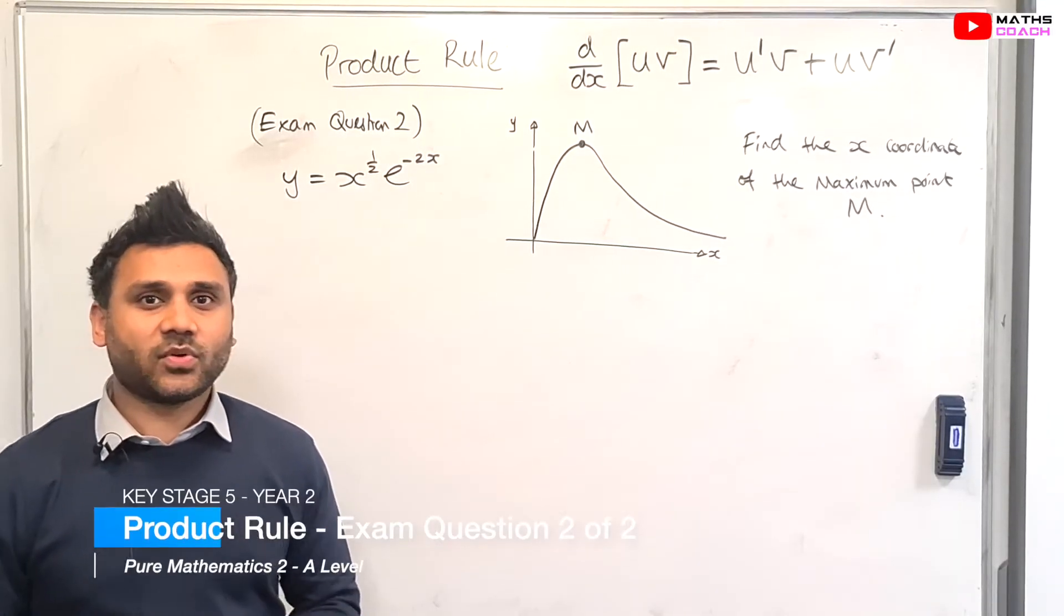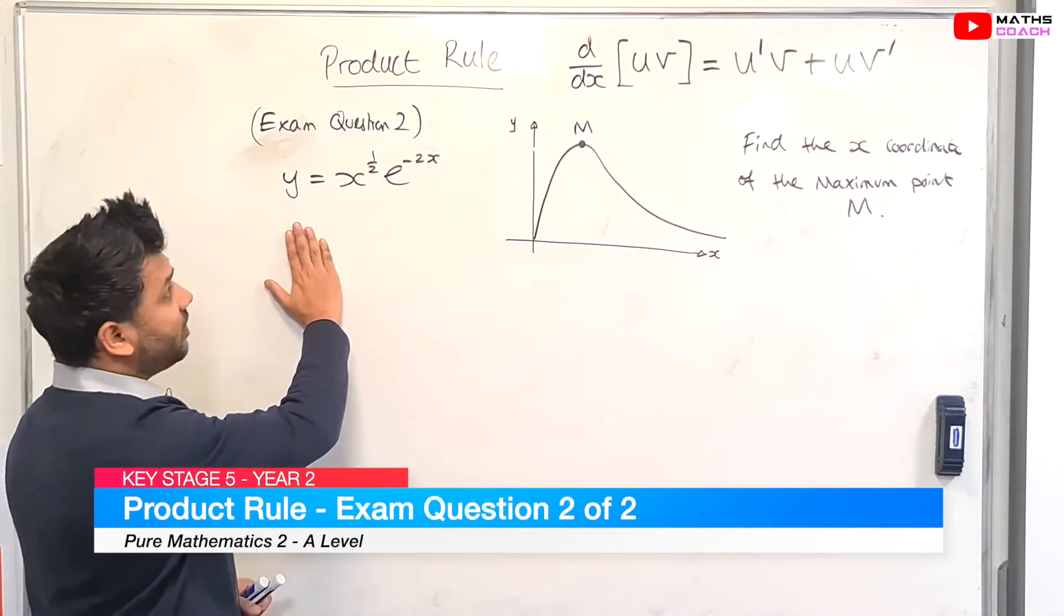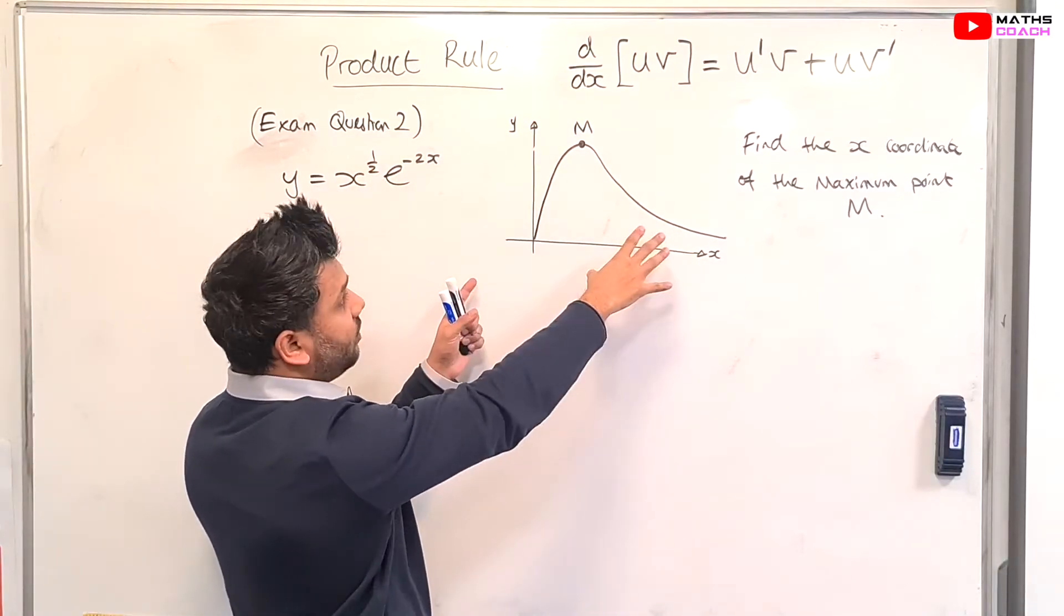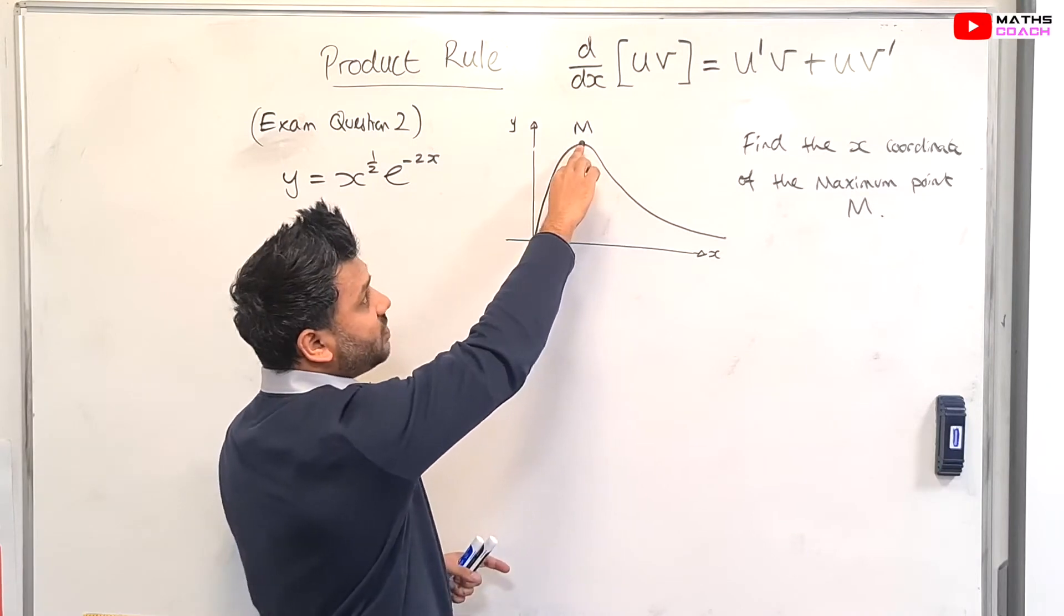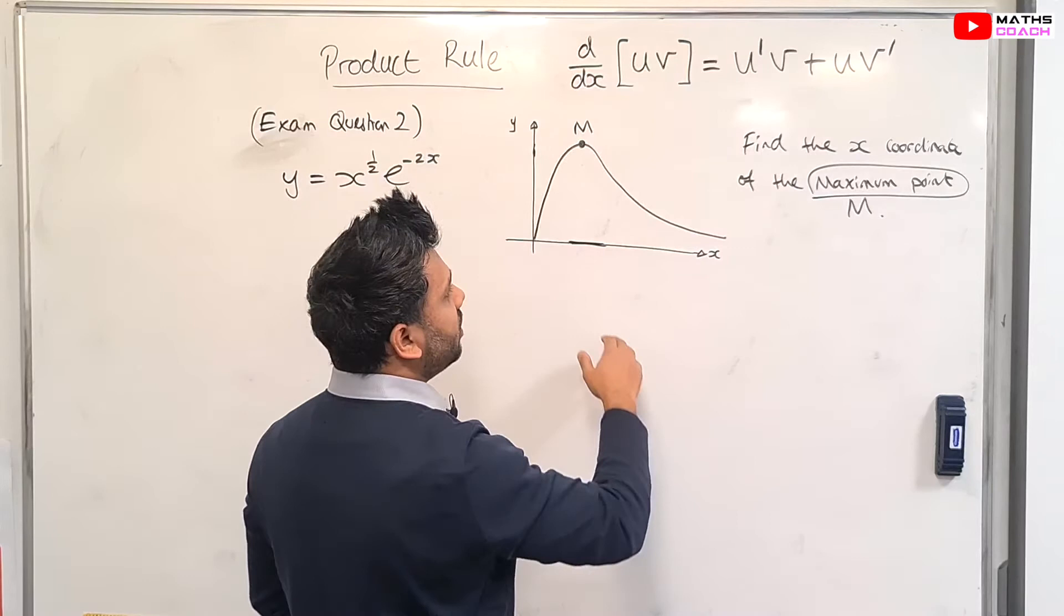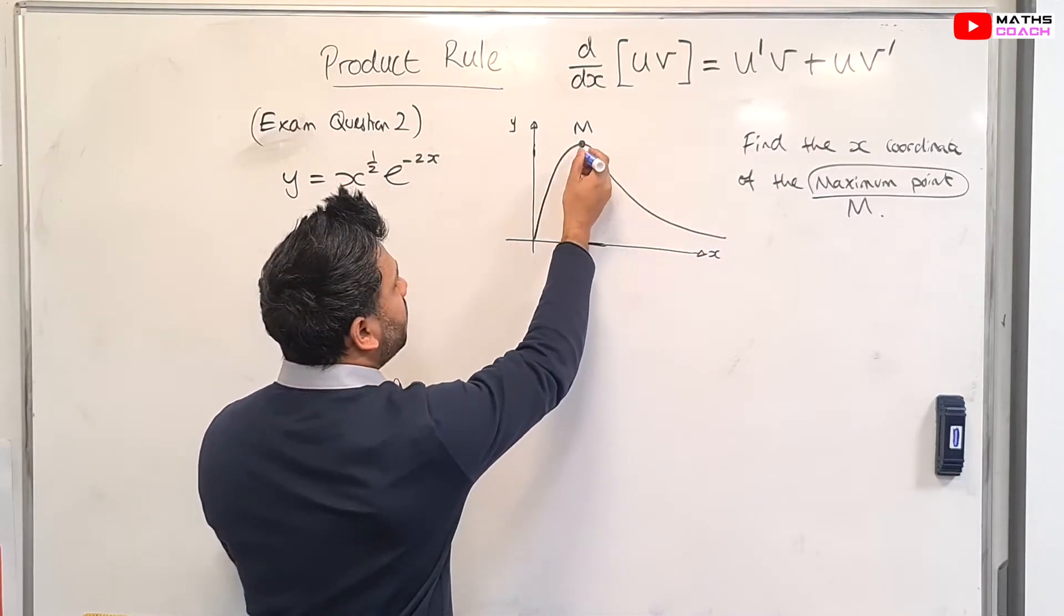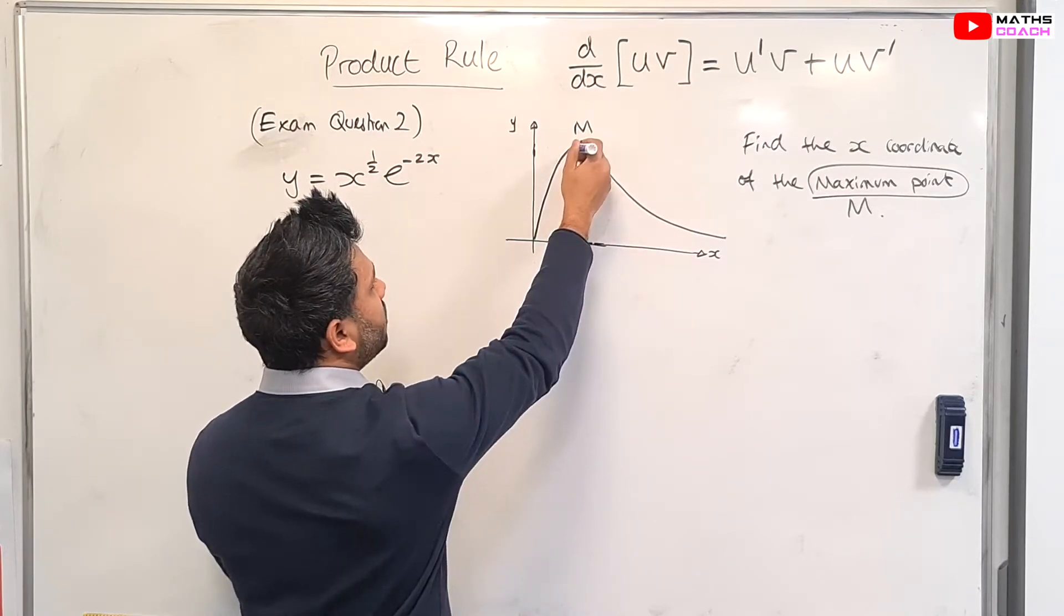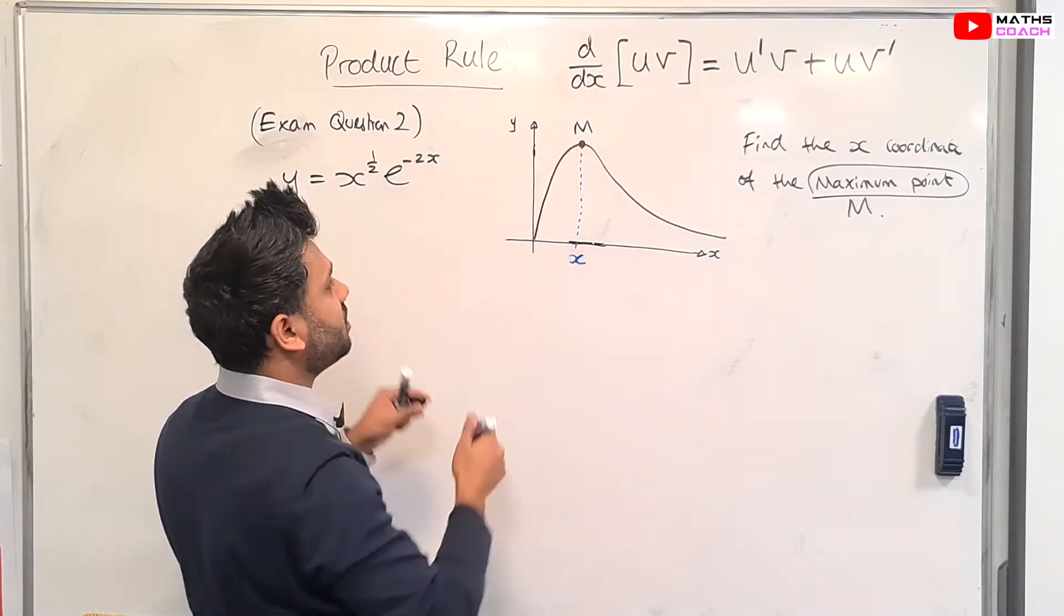OK, one final exam question on the use of the product rule. So here we have y defined as x to the power of half times e to the minus 2x. Here's the graph of this function. And we can see that the graph has one maximum point and it's labelled M. So the question says find the x-coordinate of the maximum point M, which is here.